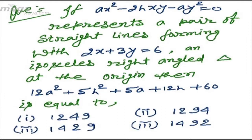The options are: first option is 1249, second option is 1294, third option is 1429, and fourth is 1492.